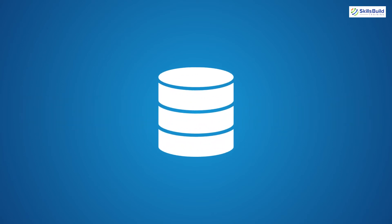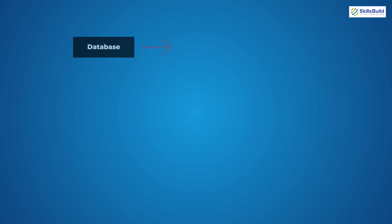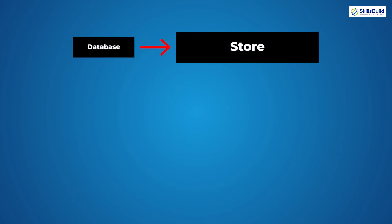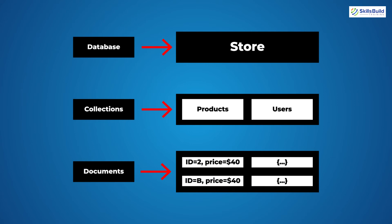Now let's talk about the second type of database — the non-relational database — and its relation with MongoDB and NoSQL. A non-relational database is one which does not have relationships, or has very few. NoSQL and MongoDB follow the structure of non-relational databases. In non-relational databases we do not have tables; instead we have collections, and in those collections we have documents of data, which are like rows in relational database tables.